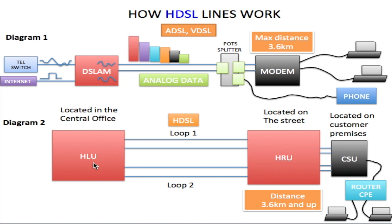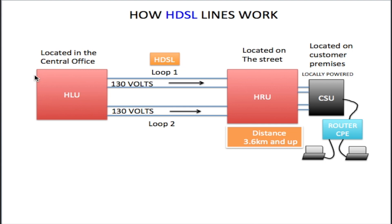The standard distance between an HLU and an HRU is 3.6 kilometers. The HLU is within the central office, gets its power from the central office, and also provides power to the HRU. It sends 130 volts down loop 1 to the HRU and 130 volts on loop 2 to the HRU. Without these voltages the HRU would not power up, so both voltages are necessary for the HRU to work. There is no voltage going from the HRU to the CSU — the CSU is locally powered.